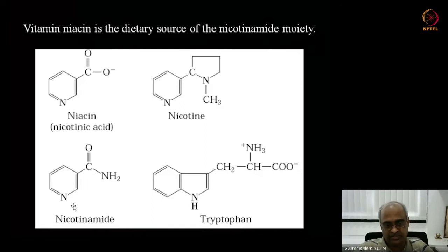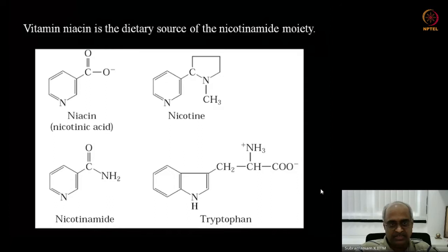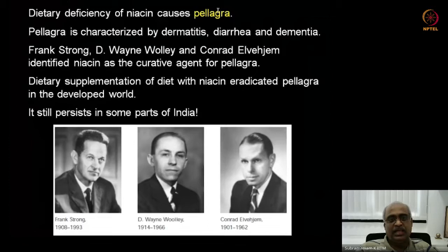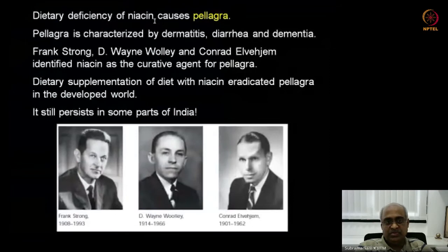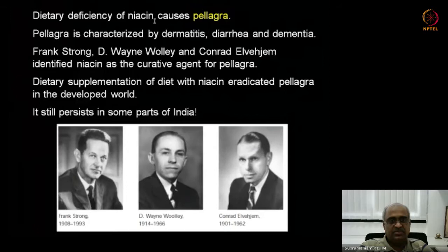That is why niacin's availability in the diet is critical. Synthetically, niacin was originally made from nicotine, which is why the names are similar, but nicotine from tobacco cannot make niacin. So smoking is not going to provide the raw precursors to make NAD. When the diet lacks niacin, you have vitamin deficiency leading to the disease called pellagra.